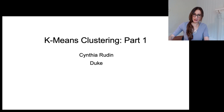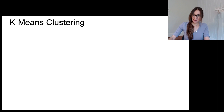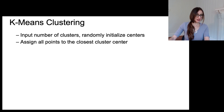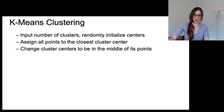Let's talk about k-means, which is probably the most popular clustering algorithm. The steps are: input the number of clusters and randomly initialize the cluster centers, assign all points to the closest cluster center, change the cluster centers to be in the middle of their points, and repeat until convergence.